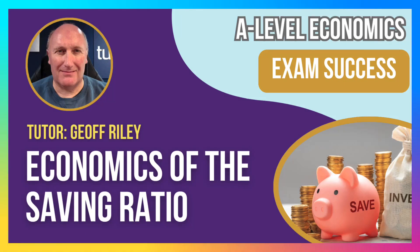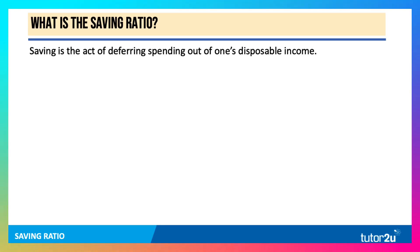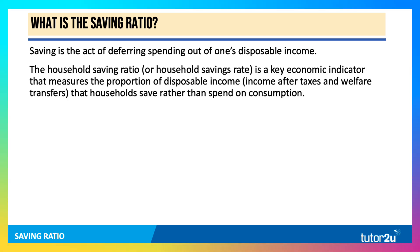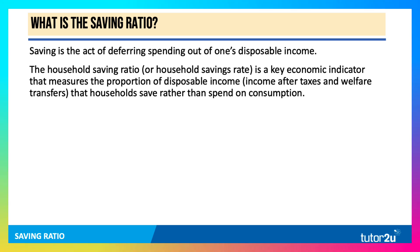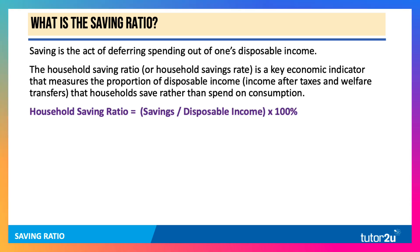Hi there, it's Geoff here with a macroeconomics video looking at the economics of the savings ratio. Saving is the act of deferring or postponing spending out of your disposable income. The savings ratio, or savings rate, is an important economic indicator that measures the percentage of disposable income — that's income after direct taxes and welfare transfers — that households choose to save rather than spend. The formula is savings divided by disposable income, multiplied by 100%.